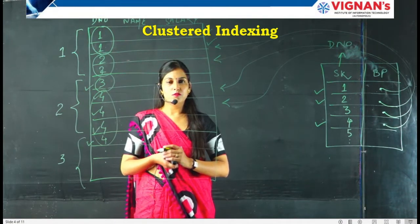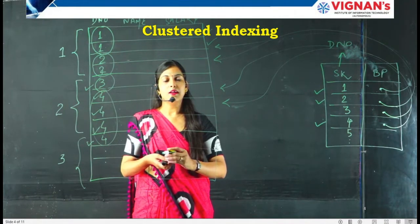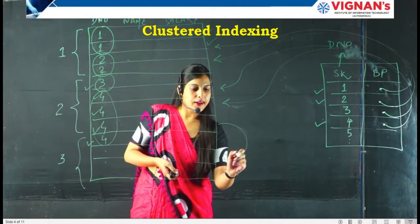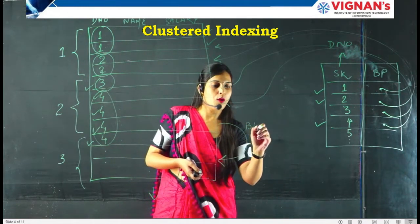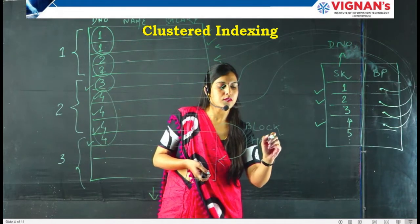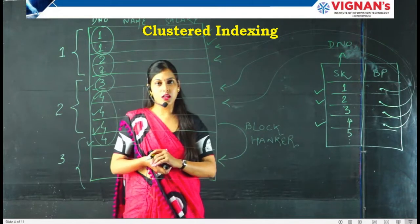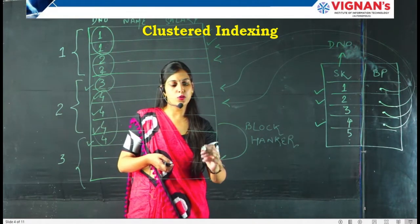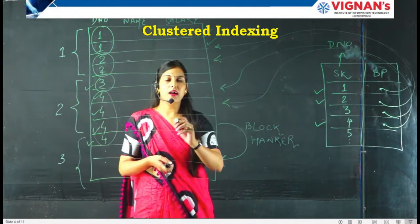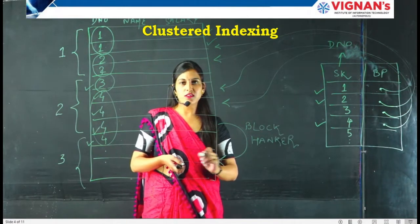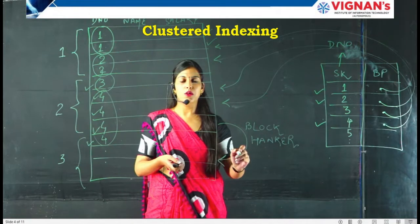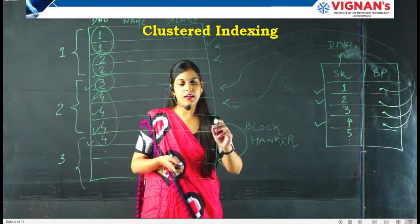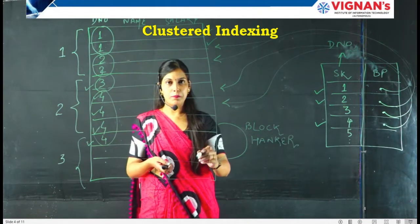When records with the same department number are spanned across multiple blocks of the hard disk, we use an additional pointer known as a block anchor. Any records with the same value spanning multiple data blocks use the block anchor to go to the next record with the same value. For example, when writing an answer sheet and the page runs out, you write 'Please Turn Over' (PTO) because the rest of the answer is on the next page. Similarly, the block anchor tells us that another record with the same department number is present in the next block.